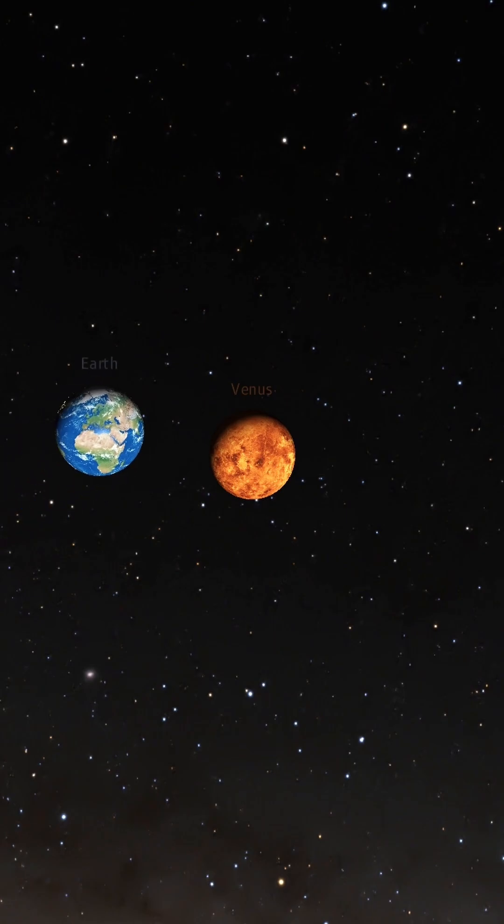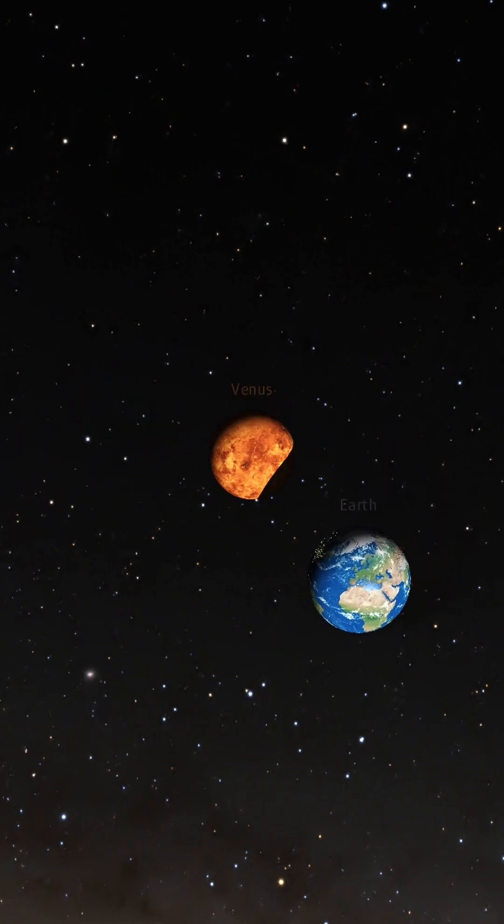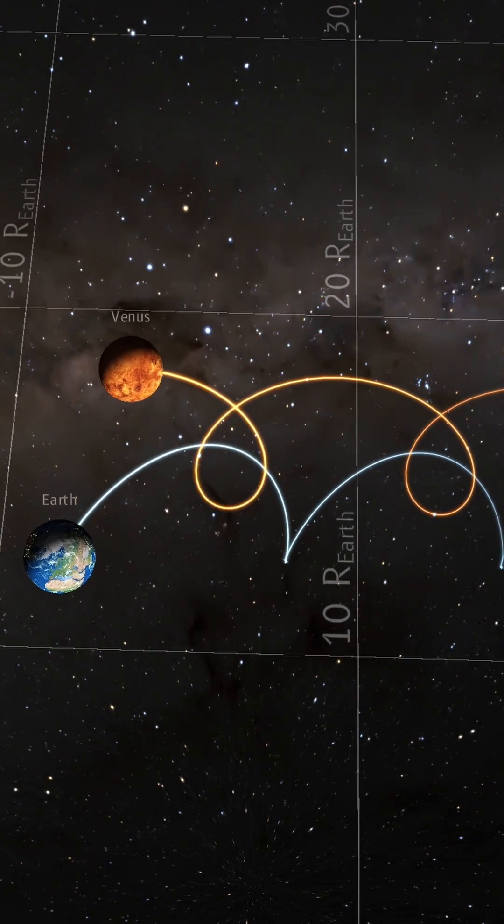Venus. Yes, actually, they can binary orbit each other. Their orbit looks something like this.